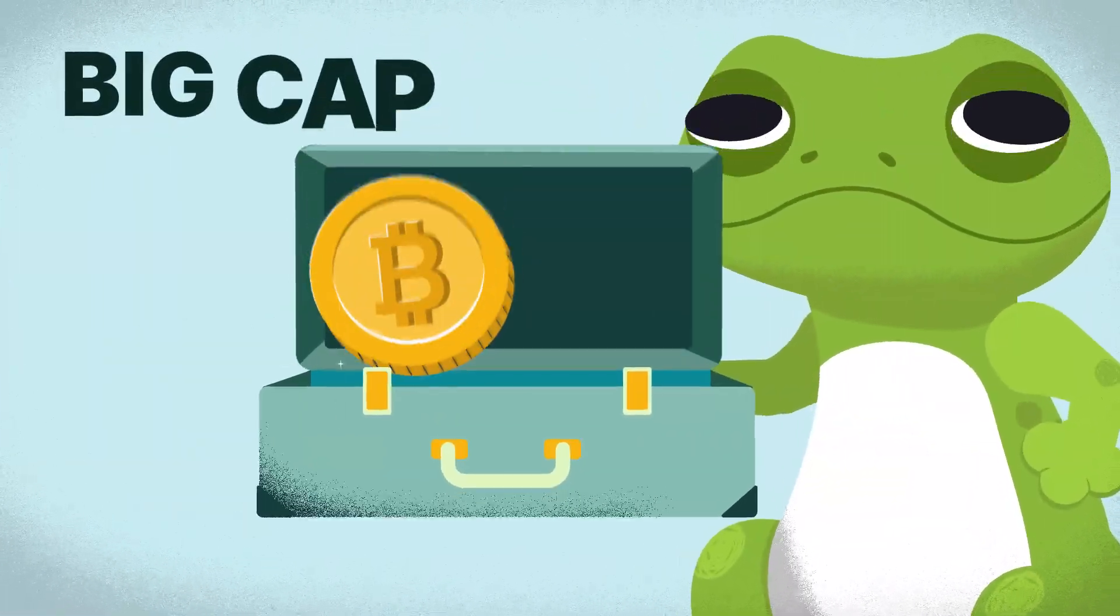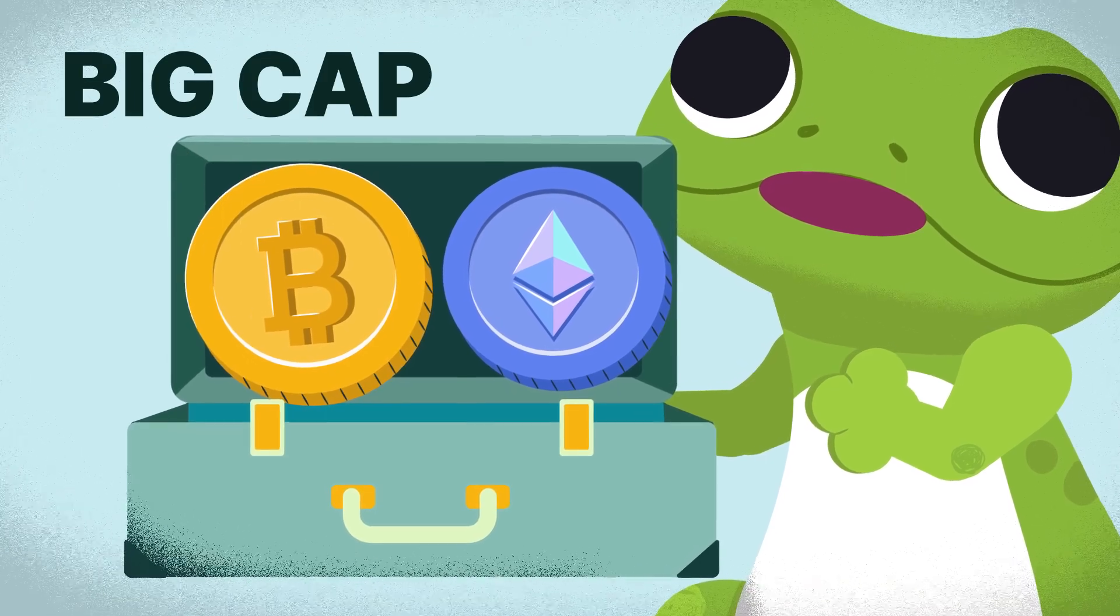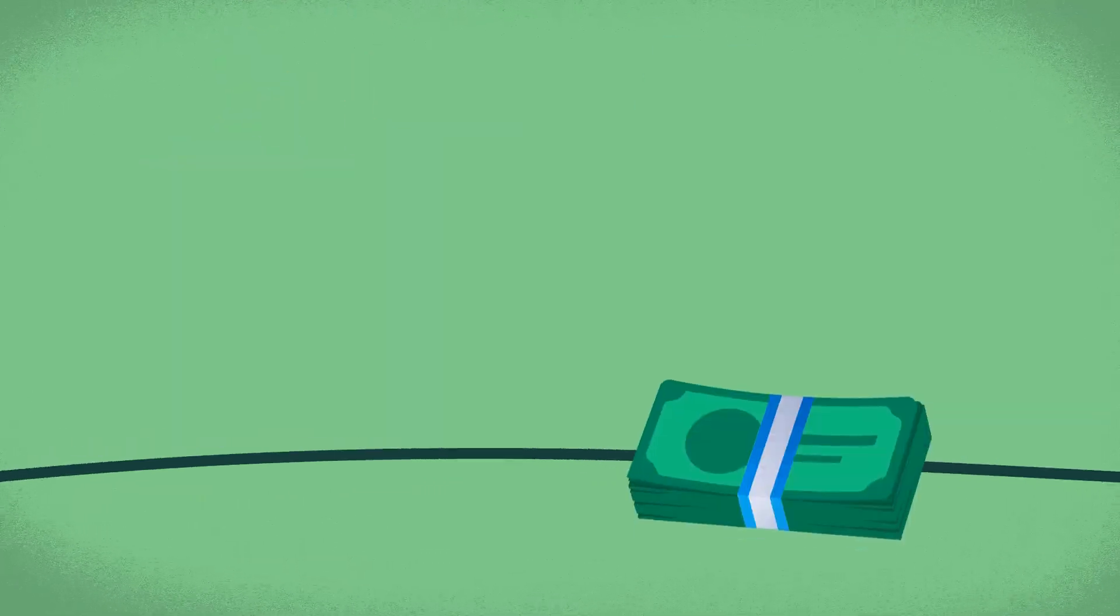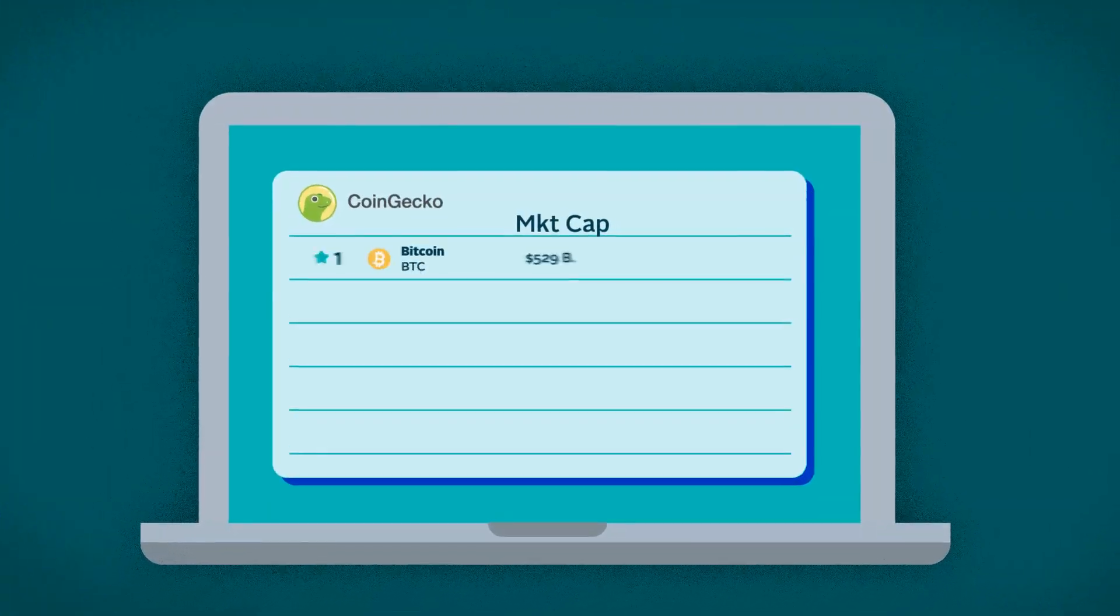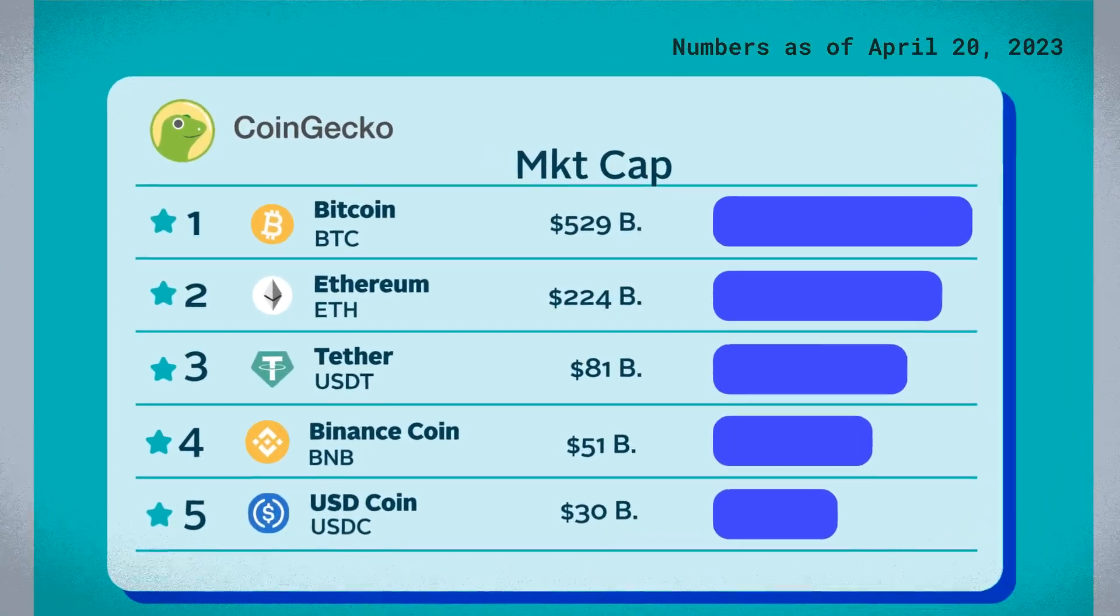Big Cap Coins like Ethereum or Bitcoin are often treated as a more stable investment compared to small cap coins, which may give you a higher return on investment but are typically more volatile. In general, Market Cap is the more popular metric and widely used to rank the popularity and size of coins.